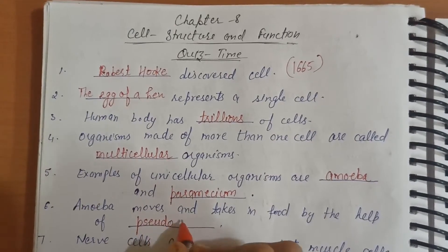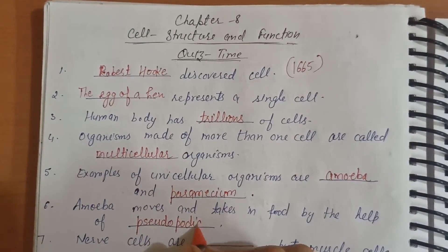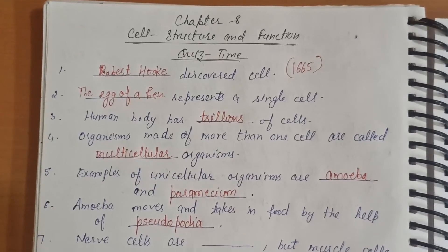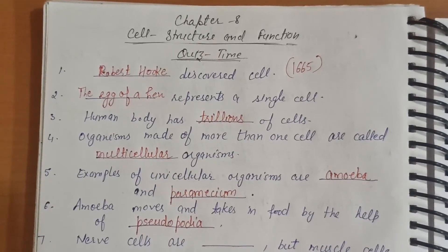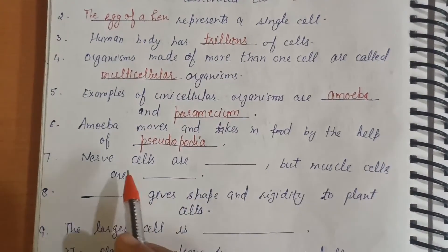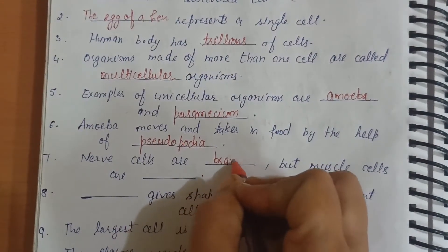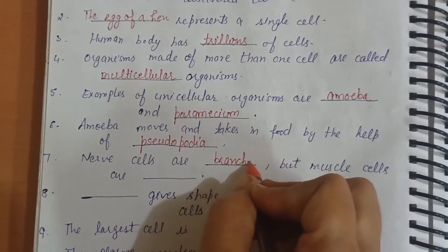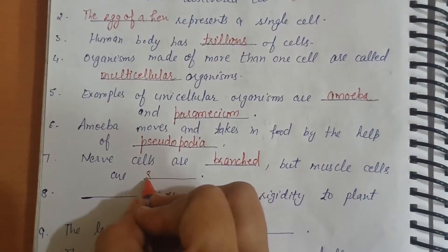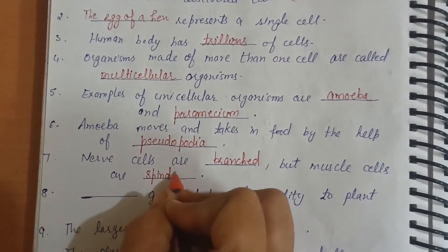Sixth, Amoeba moves and takes in food by the help of pseudopodia — false projections which help in movement and food capturing. Seventh, nerve cells are branched, but muscle cells are spindle shaped.